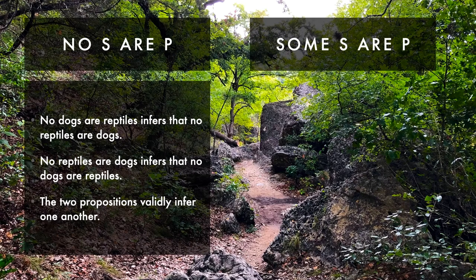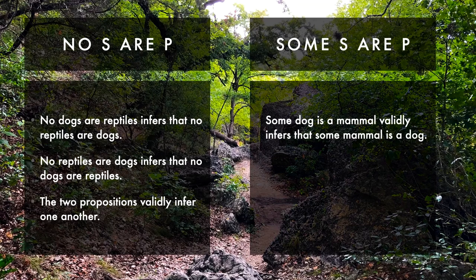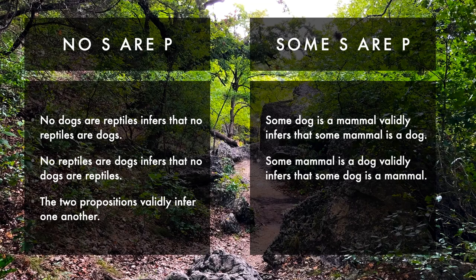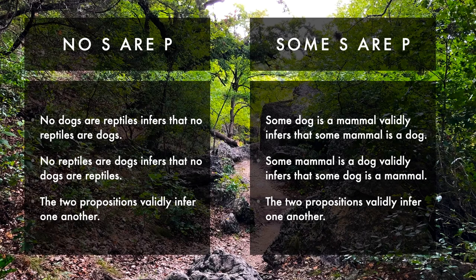Looking at the particular affirmative: 'Some S are P.' For example, 'Some dog is a mammal' validly infers 'Some mammal is a dog.' If at least some members of dog are included in the predicate category of mammal, then at least some of the mammal category includes at least one dog. And that conversion also validly infers the first particular affirmative. So these two propositions validly infer one another — they are logically equivalent.